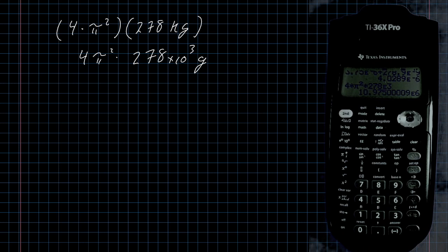And since the only approximate value is the 278, which has three significant digits, I know that this measurement also has three significant digits. 10.97, etc. But rounding that to three significant digits is actually going to be 11.0 times 10 to the sixth grams, which is 11.0 megagrams.